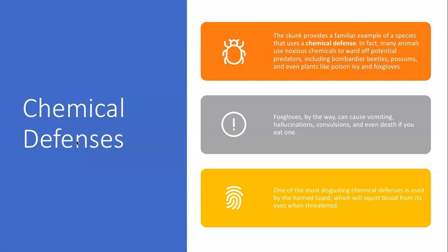One of the most disgusting chemical defenses I know of is the horned lizard, which will squirt blood from its eyes when threatened. I'm going to link some quick nature videos on Canvas so you can see what these things look like — I would have shown them in this video, but since it's going up on YouTube, I don't want them to take it down.